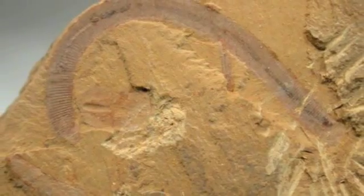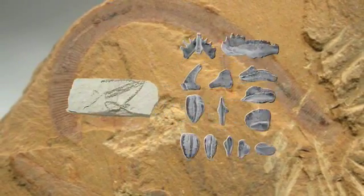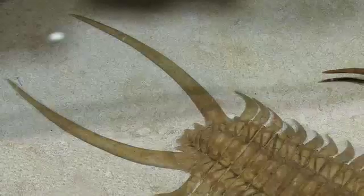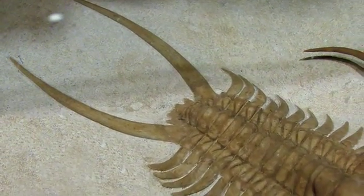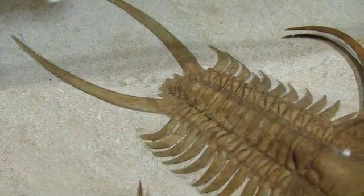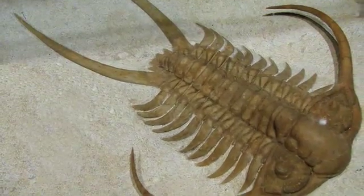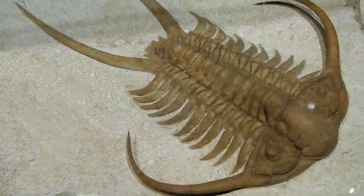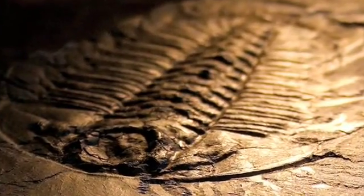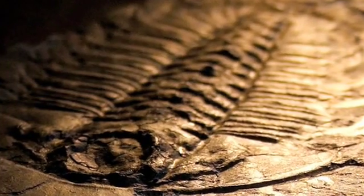The creatures of the Cambrian, 540 million years ago, are mollusks, trilobites, worms, echinoderms, and primitive chordates. All of these species are extinct today.